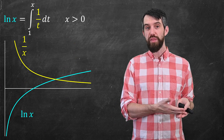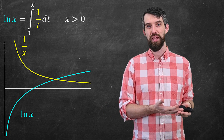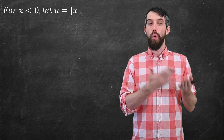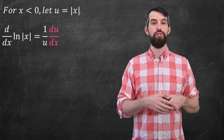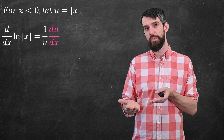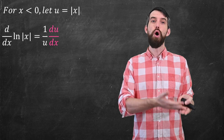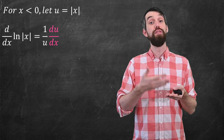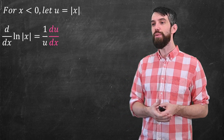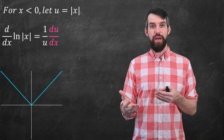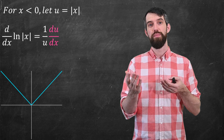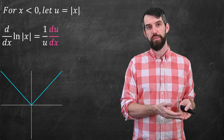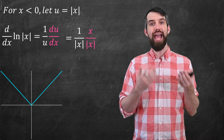So far, we've only defined the logarithm function for positive values of x. What should we do for negative values of x? I'll suggest the substitution u equals absolute value of x, so x can be positive or negative and u is always positive. Then the derivative of logarithm of absolute value of x is just a chain rule: the derivative of logarithm of u is 1 over u, multiplied by the derivative of u with respect to x. The slope of absolute value of x is either 1 when x is greater than 0 or negative 1 when x is less than 0.